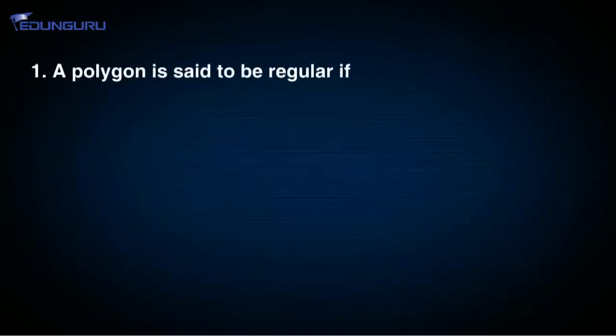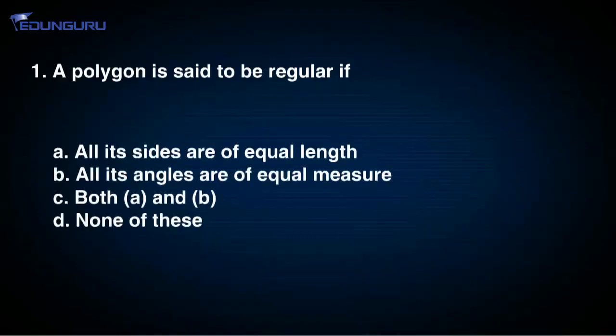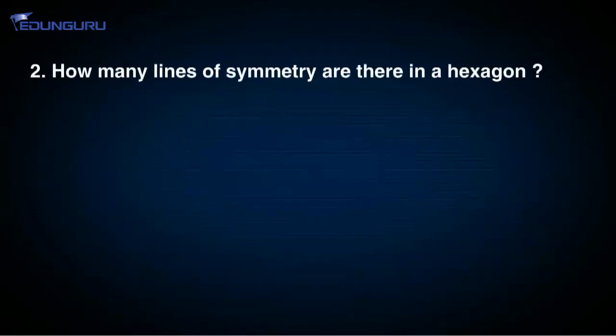Question number 1. A polygon is said to be regular if options are: A. All its sides are of equal length. B. All its angles are of equal measure. C. Both A and B. D. None of these. Question number 2. How many lines of symmetry are there in a hexagon? Options are A. Infinite, B. 4, C. 5, D. 6.